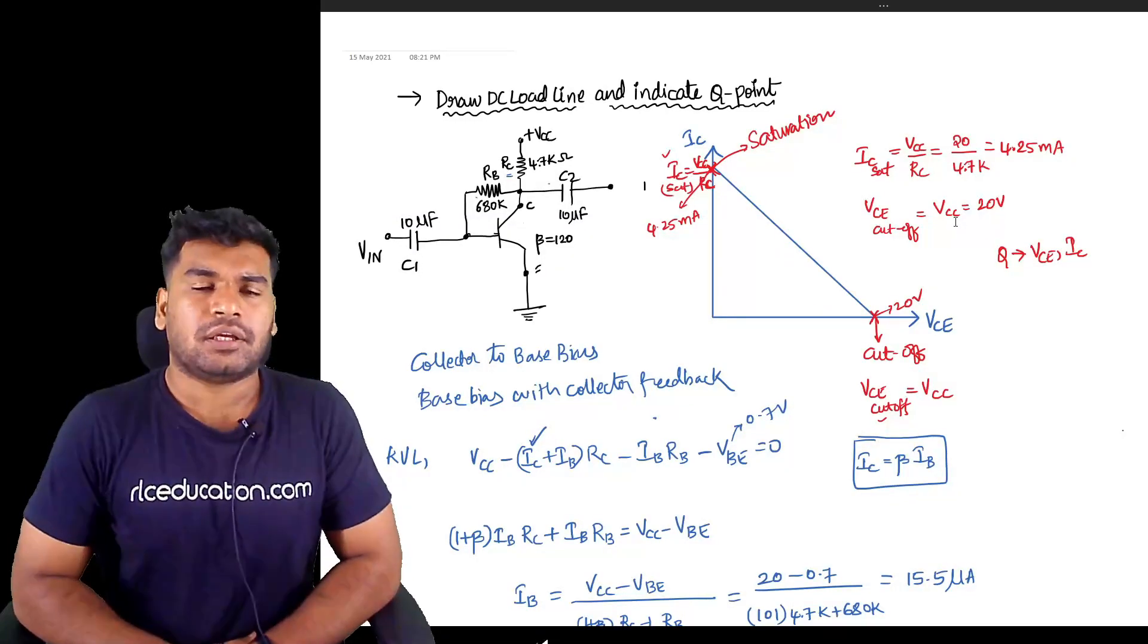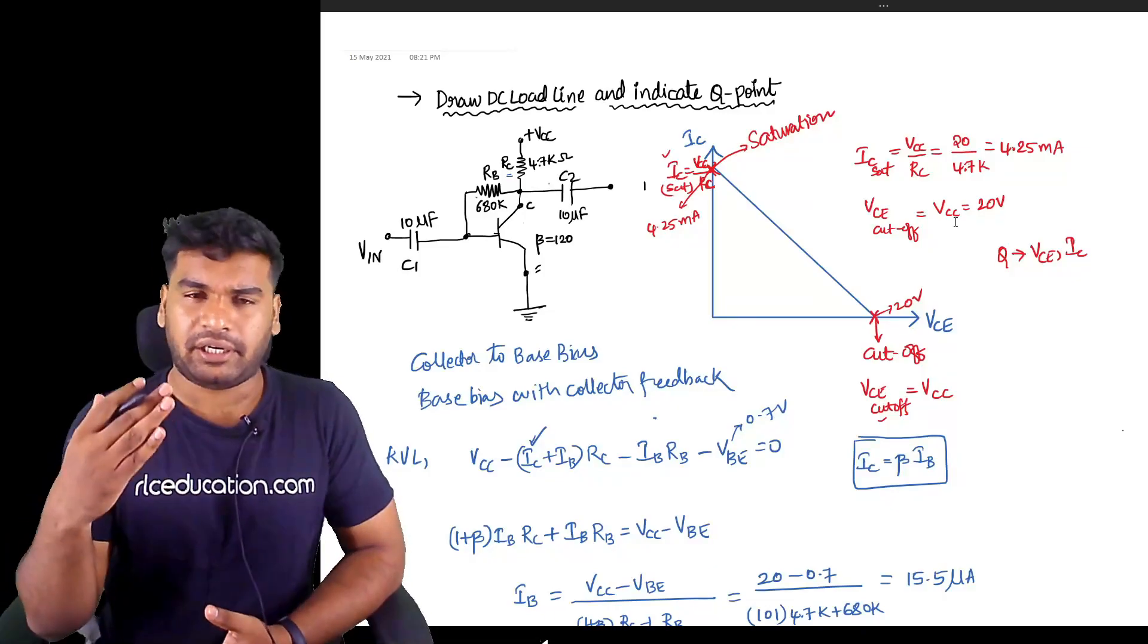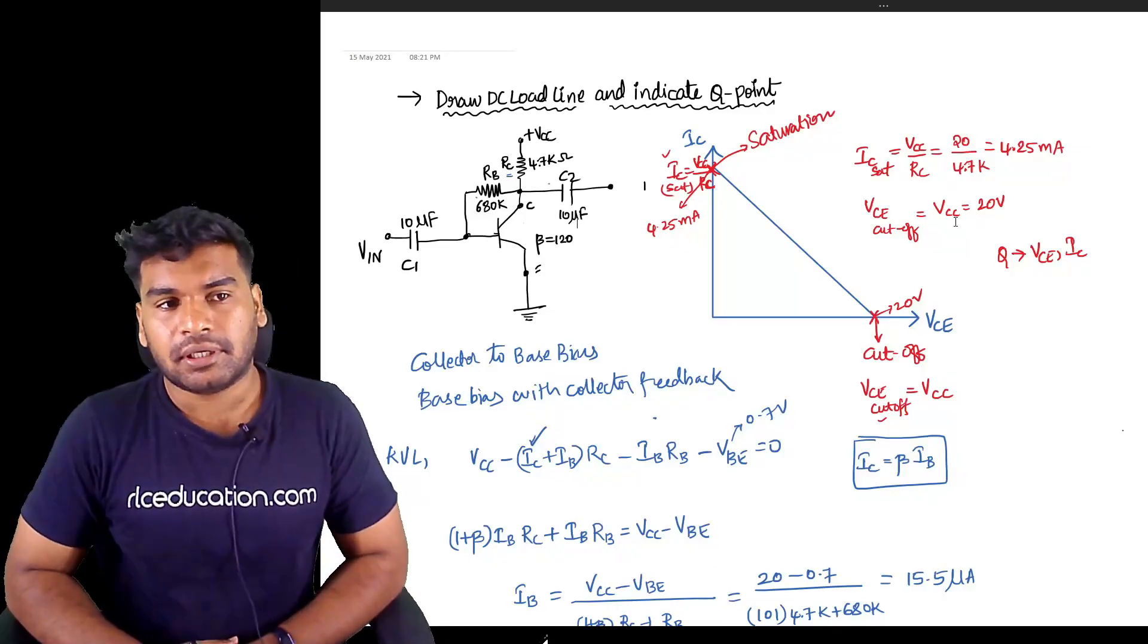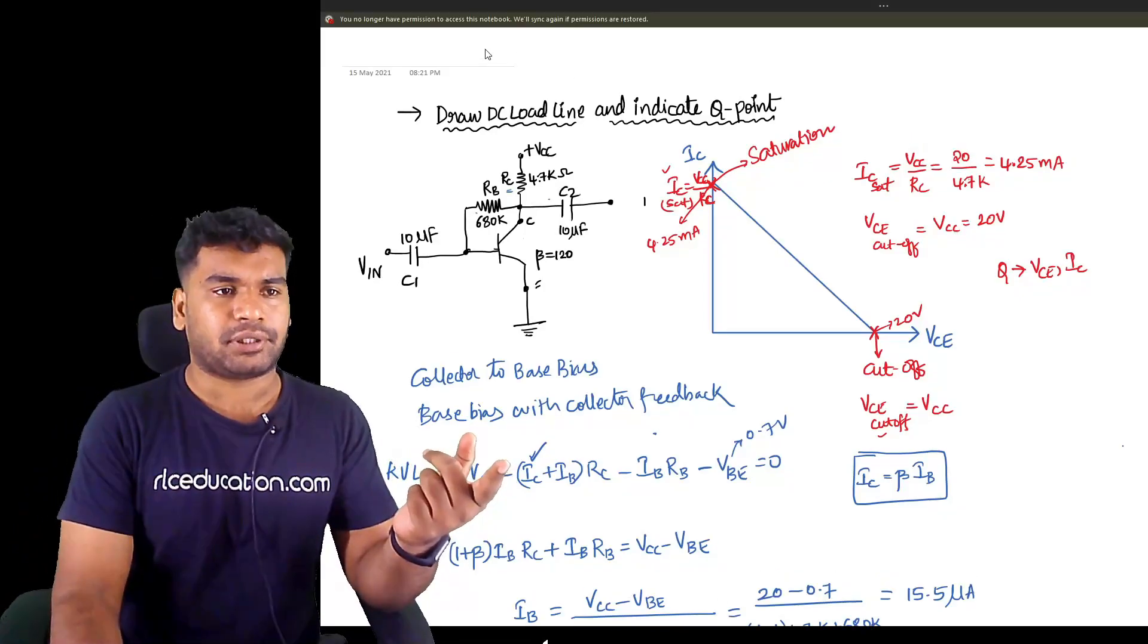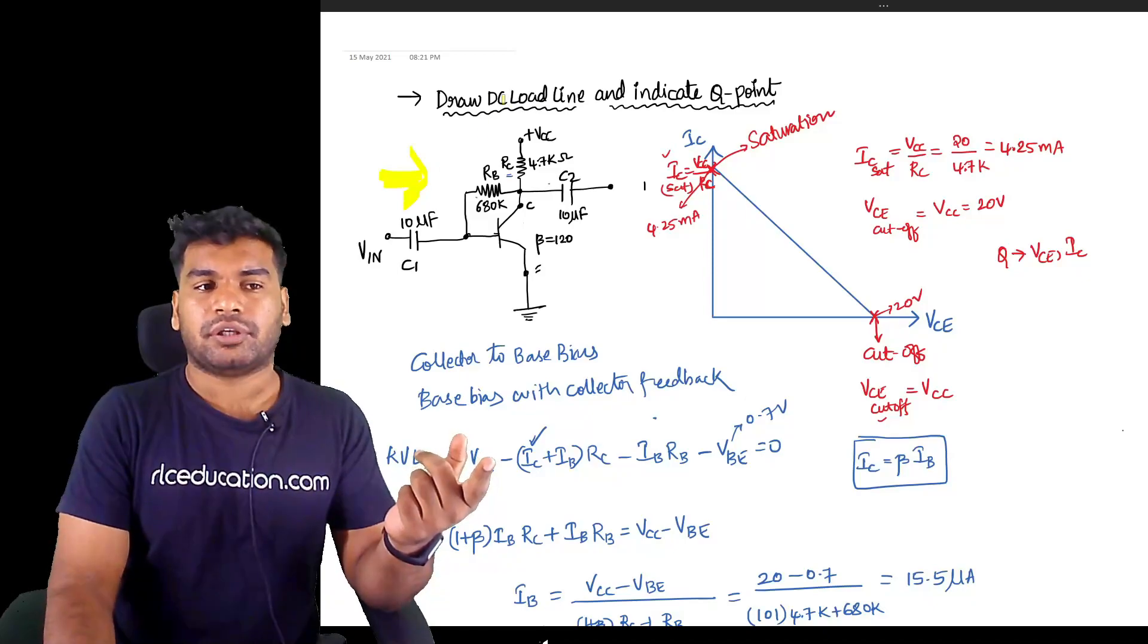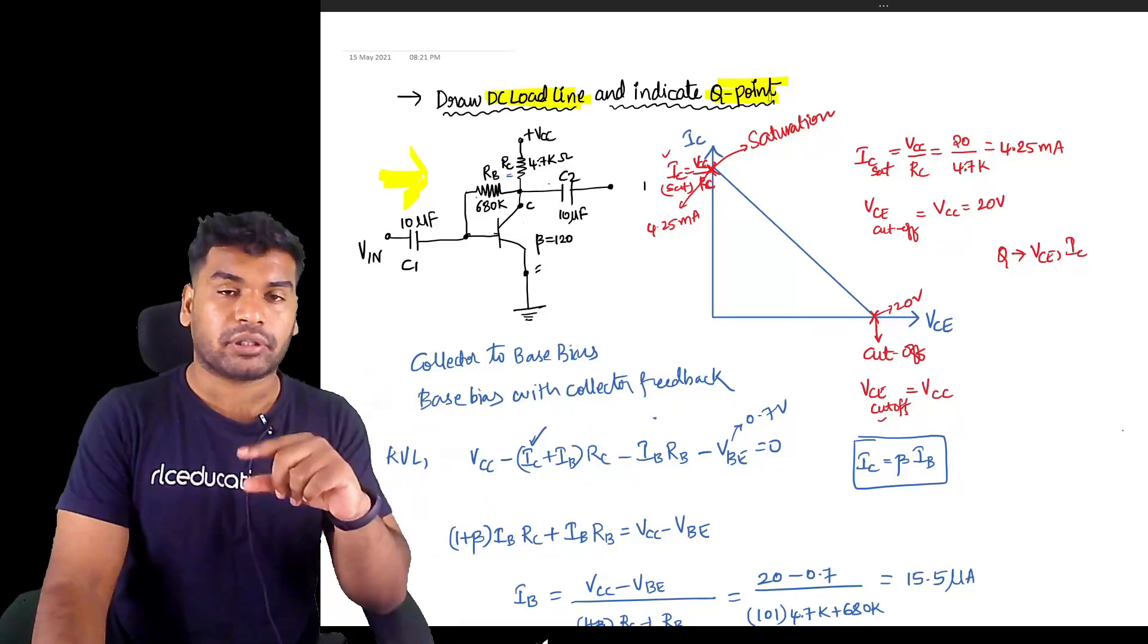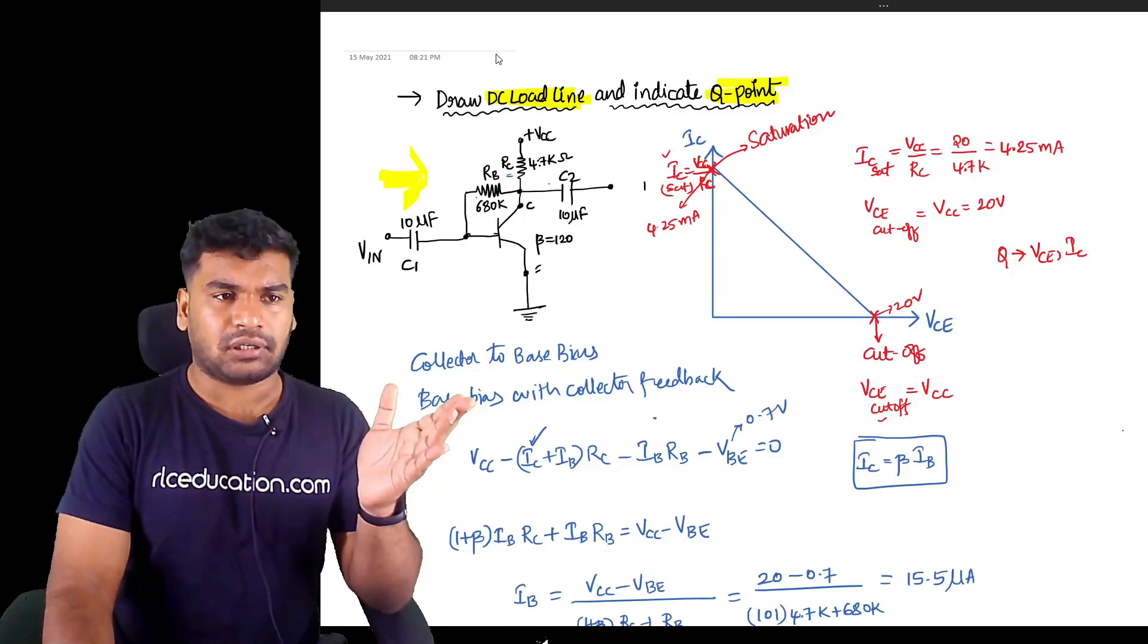Hi guys, this is Nikhil. Today I'd like to take a problem from analog electronics, basically transistor biasing circuits concept. The question here is, you've got to see this particular CE configuration amplifier. You're supposed to draw the DC load line for this particular problem and also indicate the Q-point, mention the Q-point on that particular DC load line.